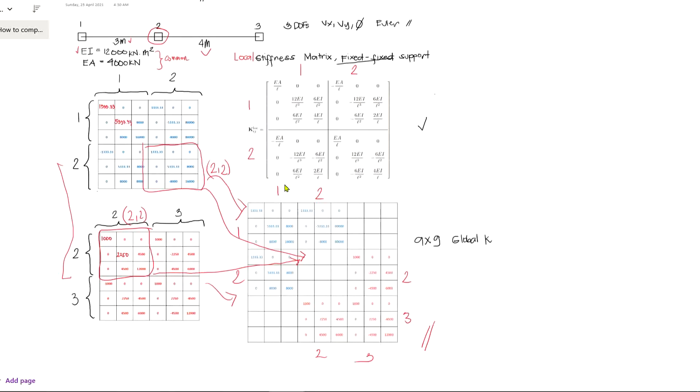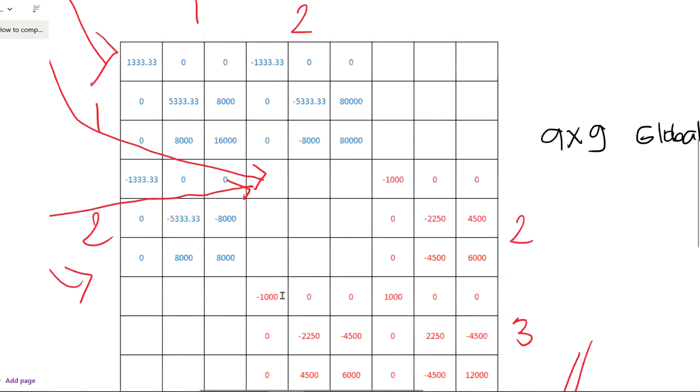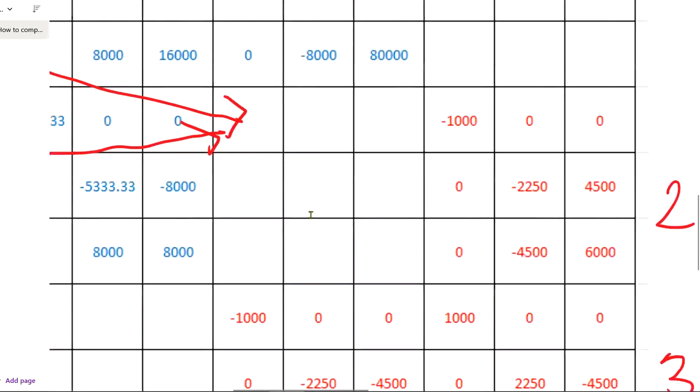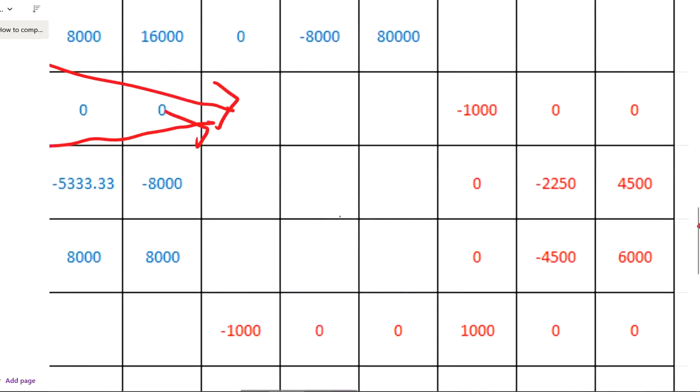The end of node element one and the beginning of element two, or simply the common block two-two. What does it mean? These entries are actually the sum of the stiffness matrix from block two-two of local stiffness matrix. That is 1333.33 from the local stiffness matrix of the first element plus 1000 from the local stiffness matrix of the second element.